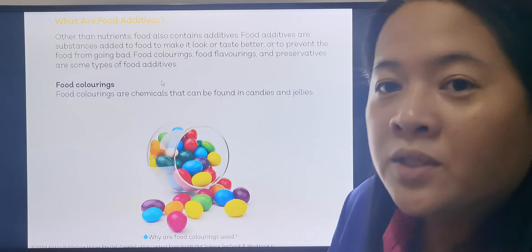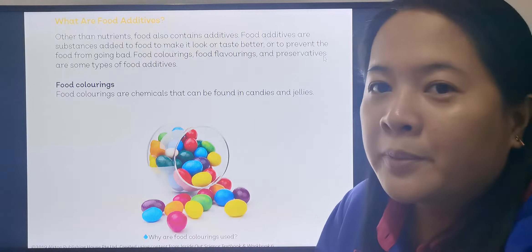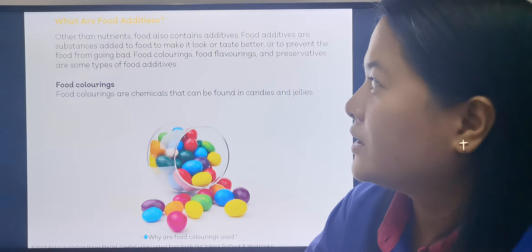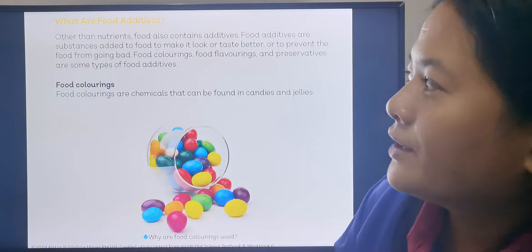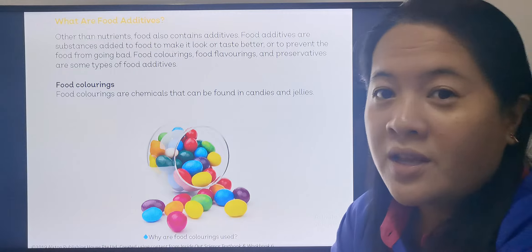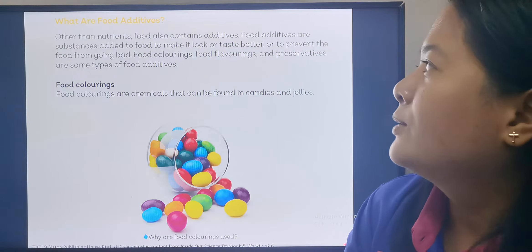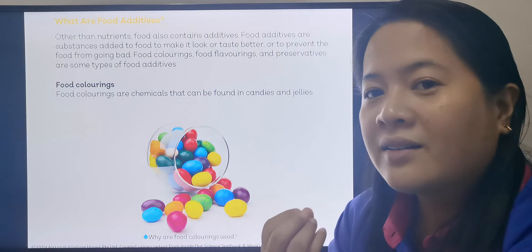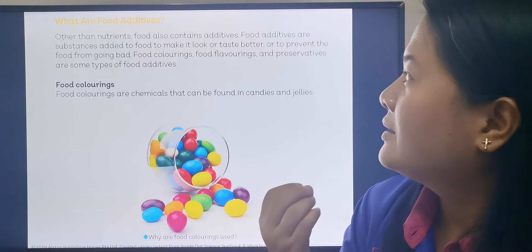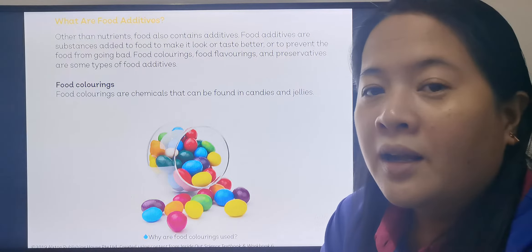We have different types of food additives: food colorings, food flavorings, and preservatives. In our book, we're going to study these three types. Other than nutrients, food also contains additives. These are substances added to make food look or taste better — usually chemicals that we add to make the food look more appealing and taste better. Preservatives are added to prevent the food from going bad or from rotting.